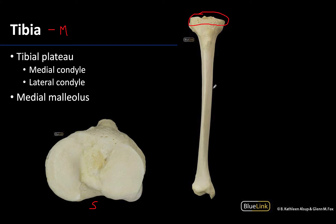When looking at a complete view of the tibia, you can identify which side is medial and which is lateral by looking at the medial malleolus on the distal end of the tibia. The medial malleolus is medially placed — it is the bump you feel on the medial side of your ankle. Using this landmark, you can identify the medial and lateral condyles.